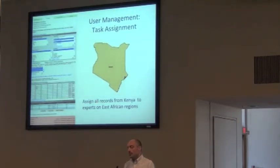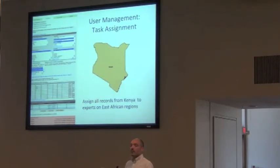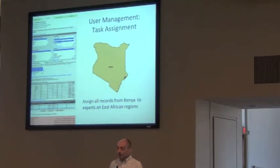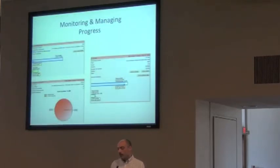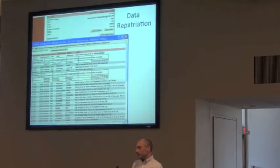Within the georeferencing portal, there are options to subdivide data. I can identify individual users and assign data to a user, saying their job is to verify all the data within a specific data source or geographic region. Also within the portal, there are various widgets for monitoring progress — you can see how much work is being done at the user level, how much at the community level, and so on.